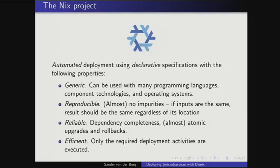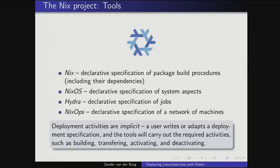Nix tools have strong reliability guarantees like dependency completeness, atomic upgrades, and rollbacks. They're efficient in that Nix only executes deployment activities required to get the system running. All driven by declarative specifications — you write a NixOS specification, it figures out what packages to build, what to transfer, and what services to activate. As an end user, you just write what you want, the tools deliver what's in the model, and for upgrades you adapt the model and run the tool again.